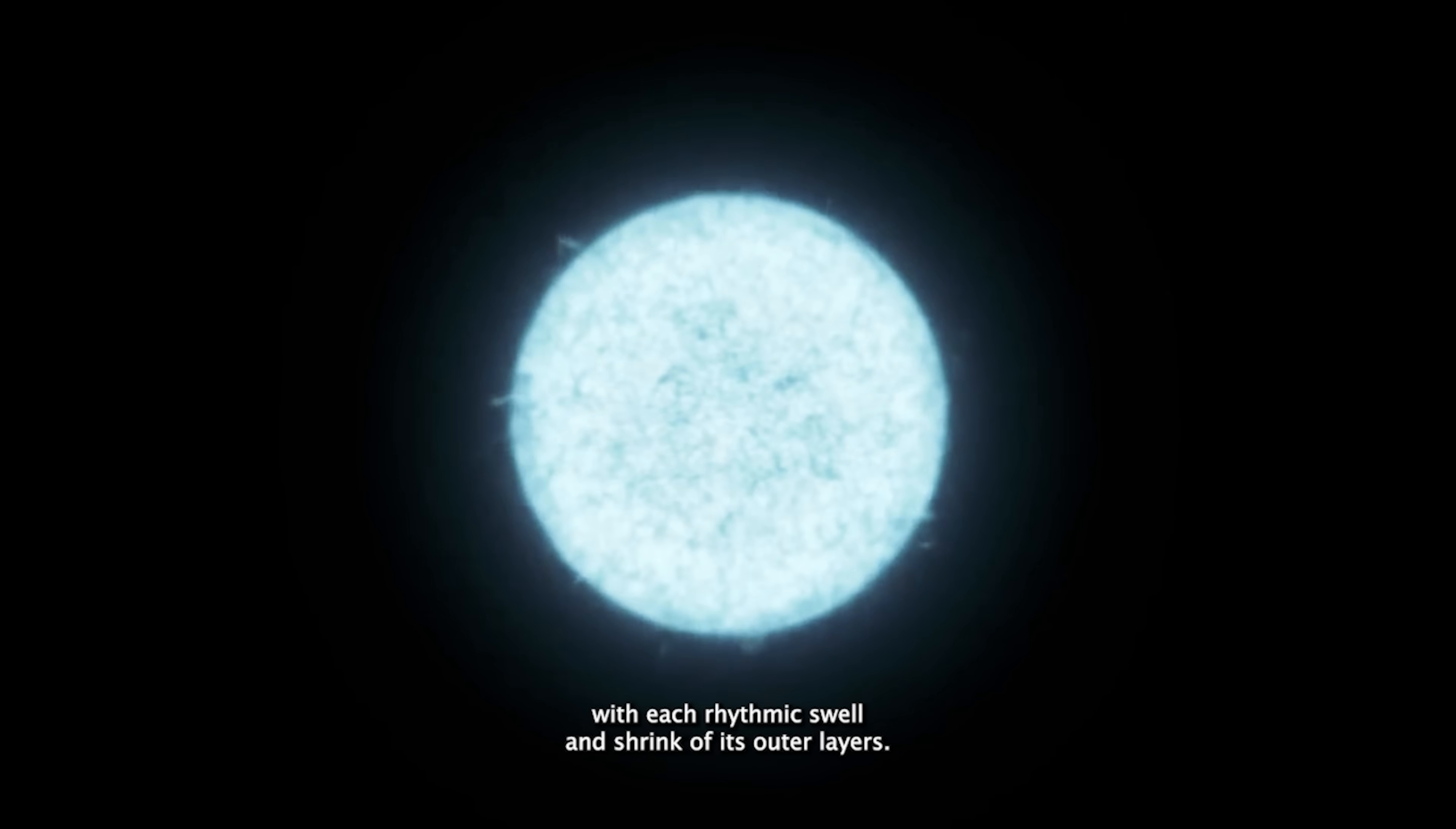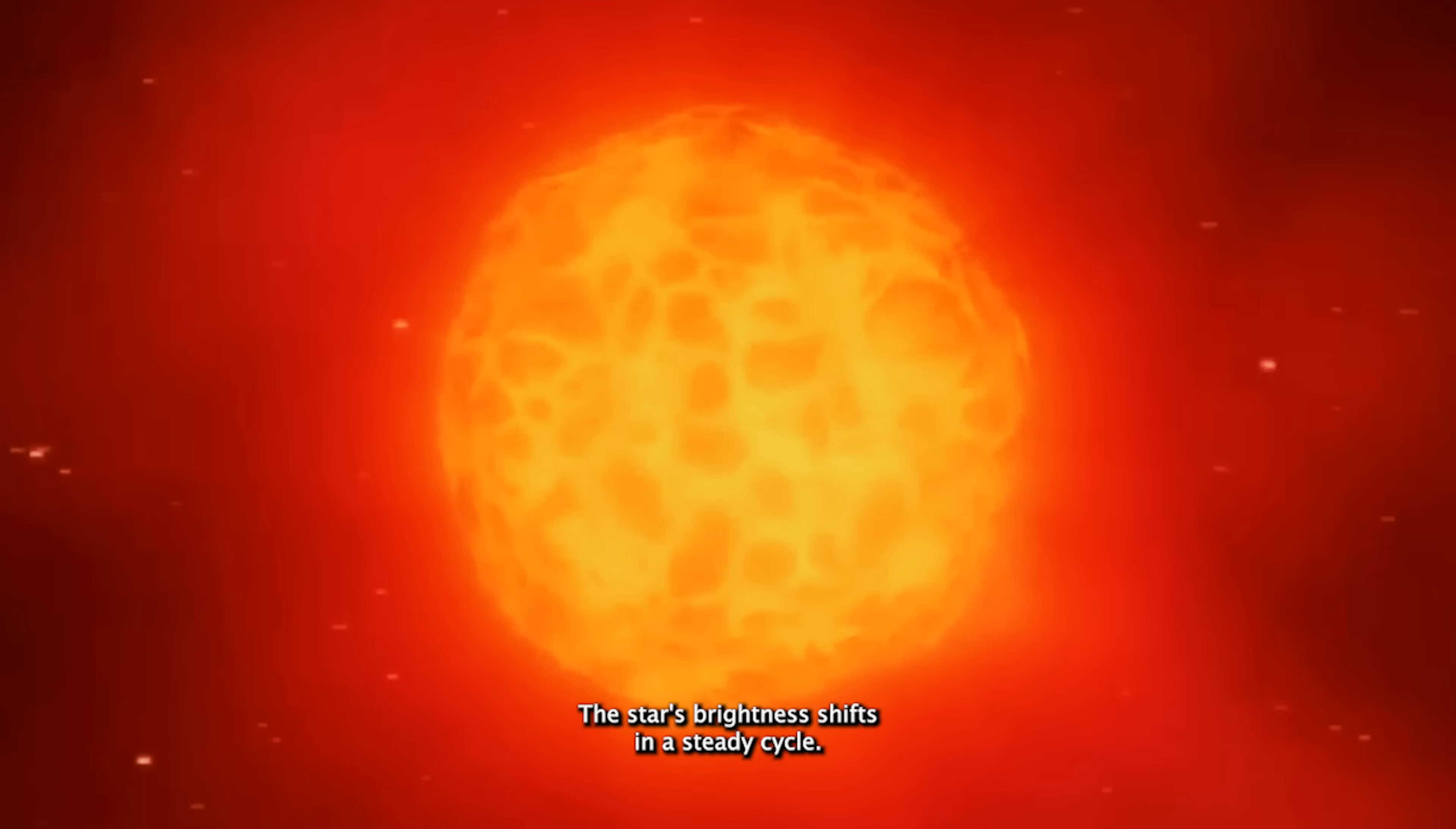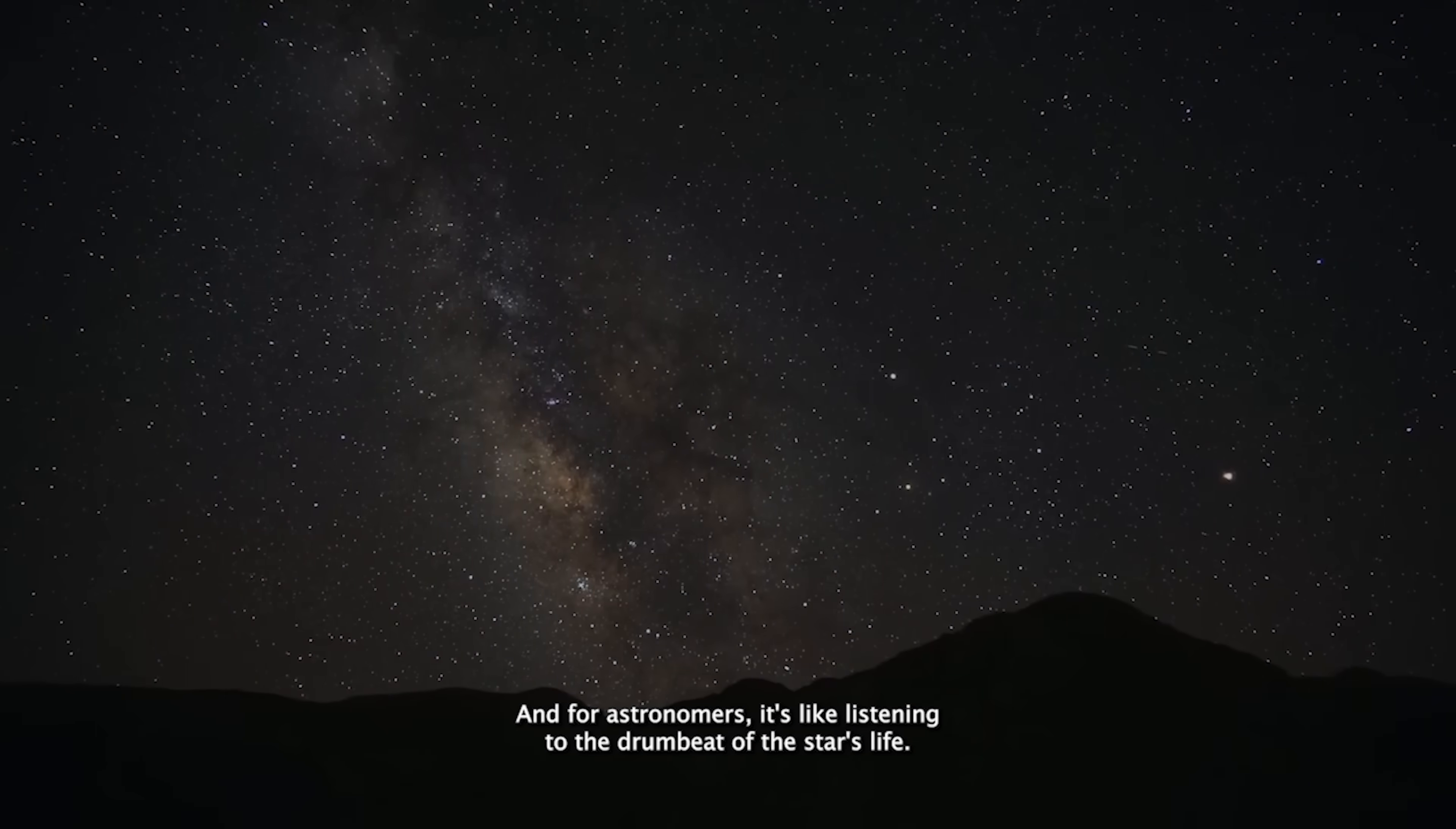With each rhythmic swell and shrink of its outer layers, the star's brightness shifts in a steady cycle. This 400-day pulse is essentially Betelgeuse's signature rhythm. And for astronomers, it's like listening to the drumbeat of the star's life.